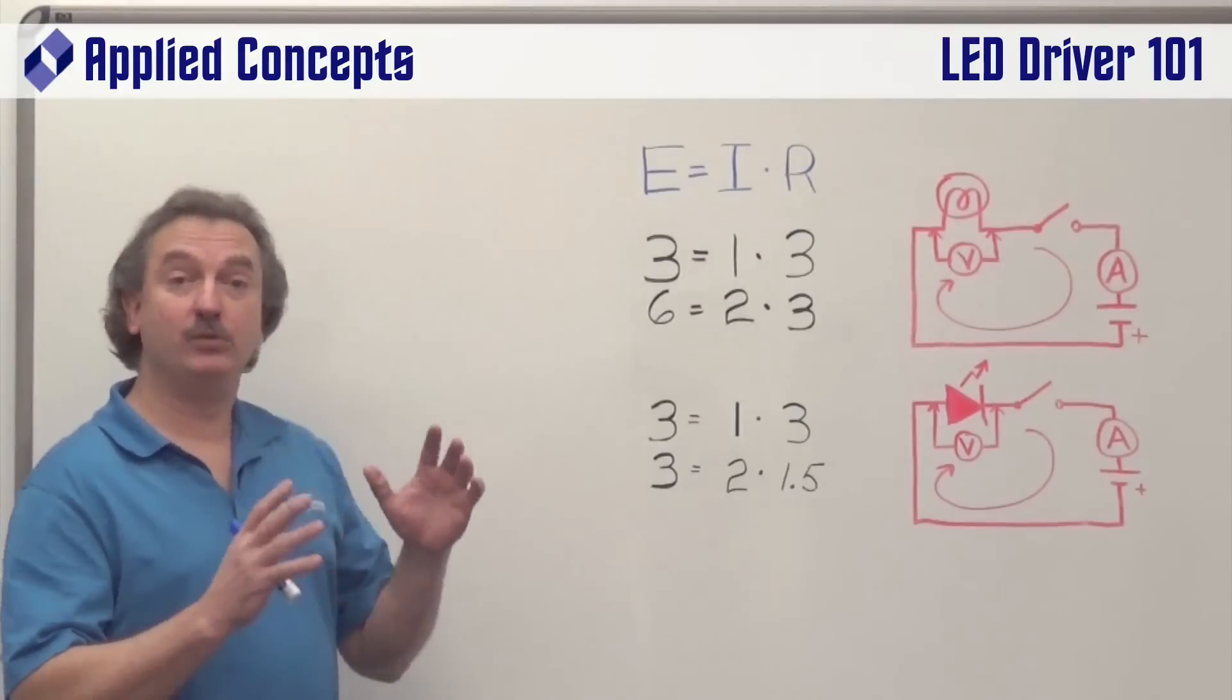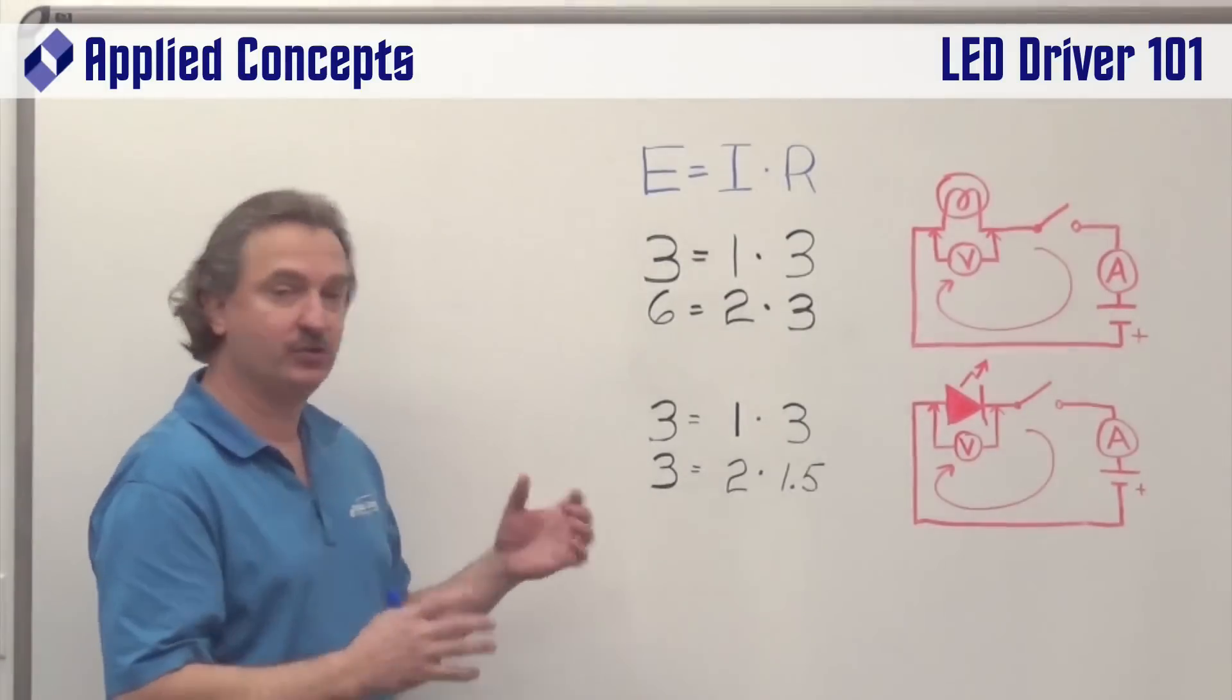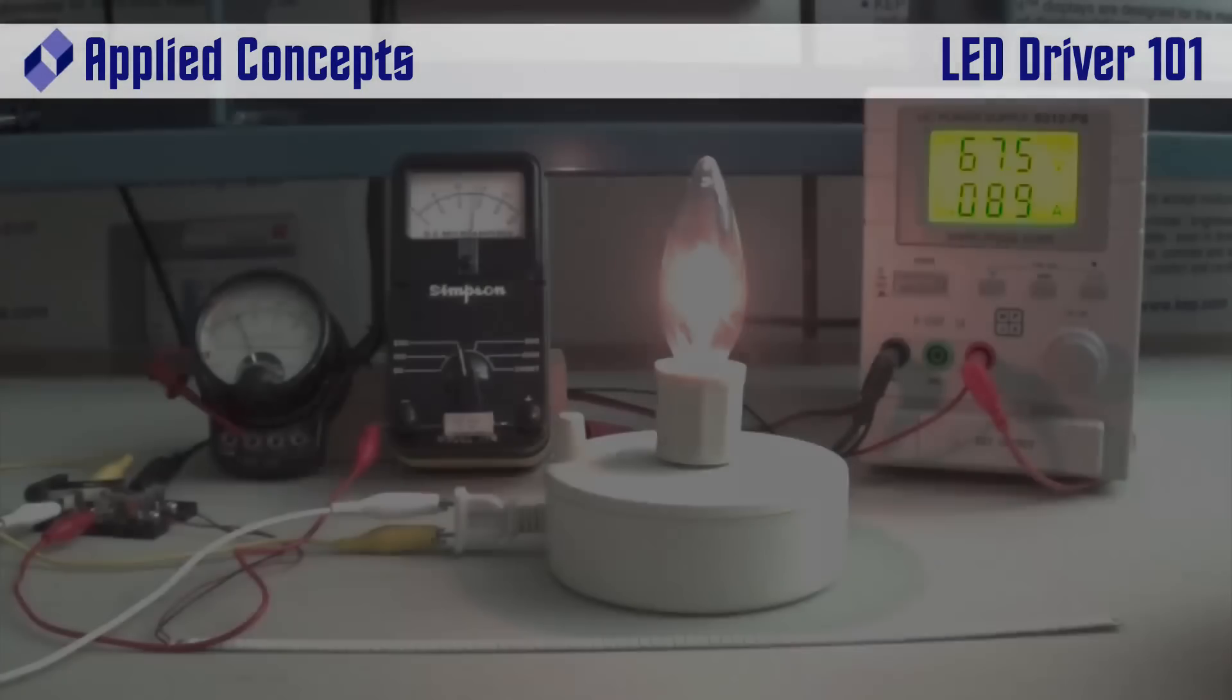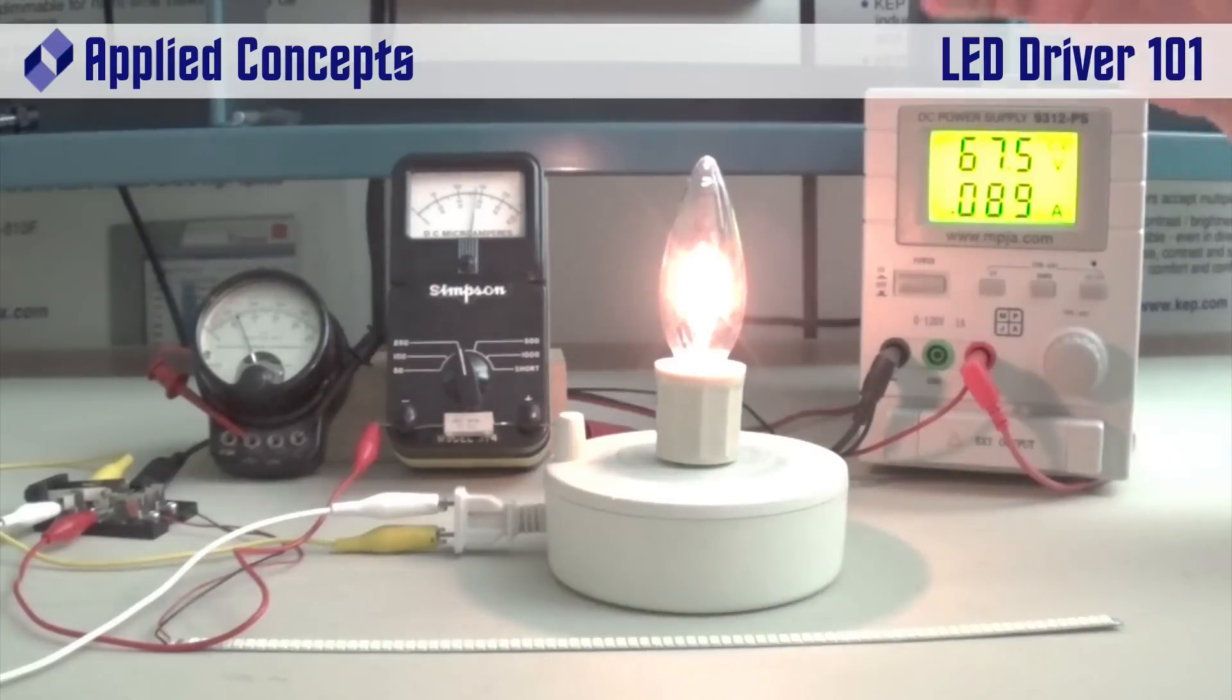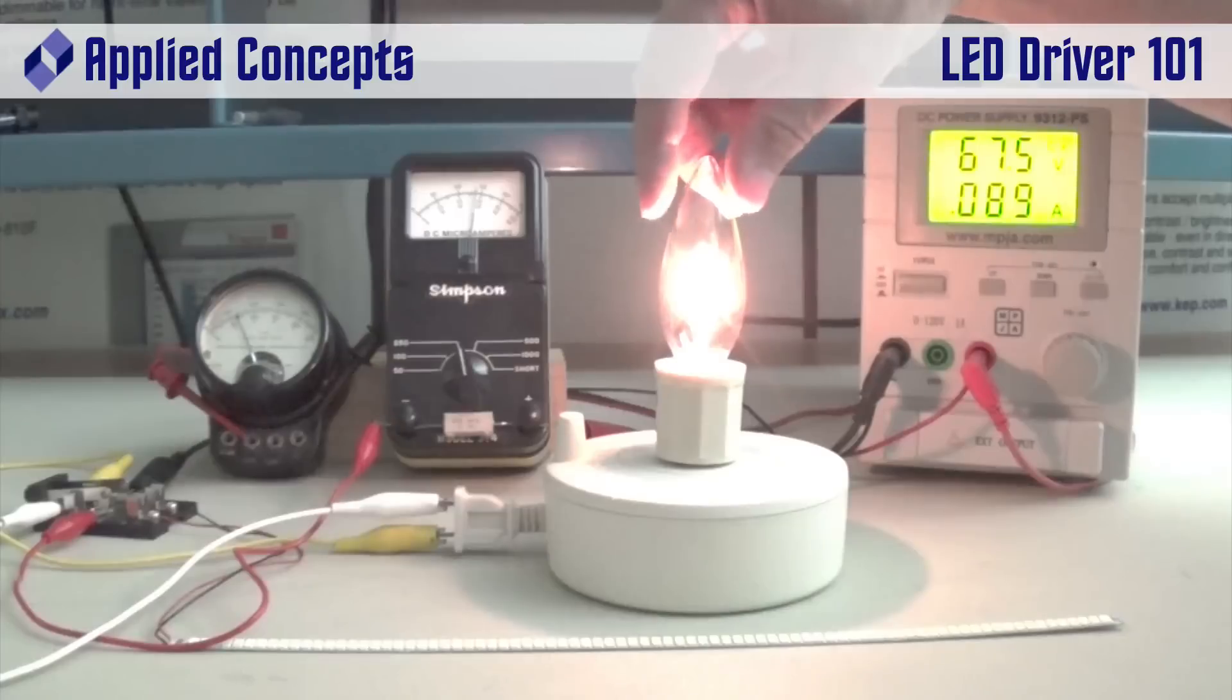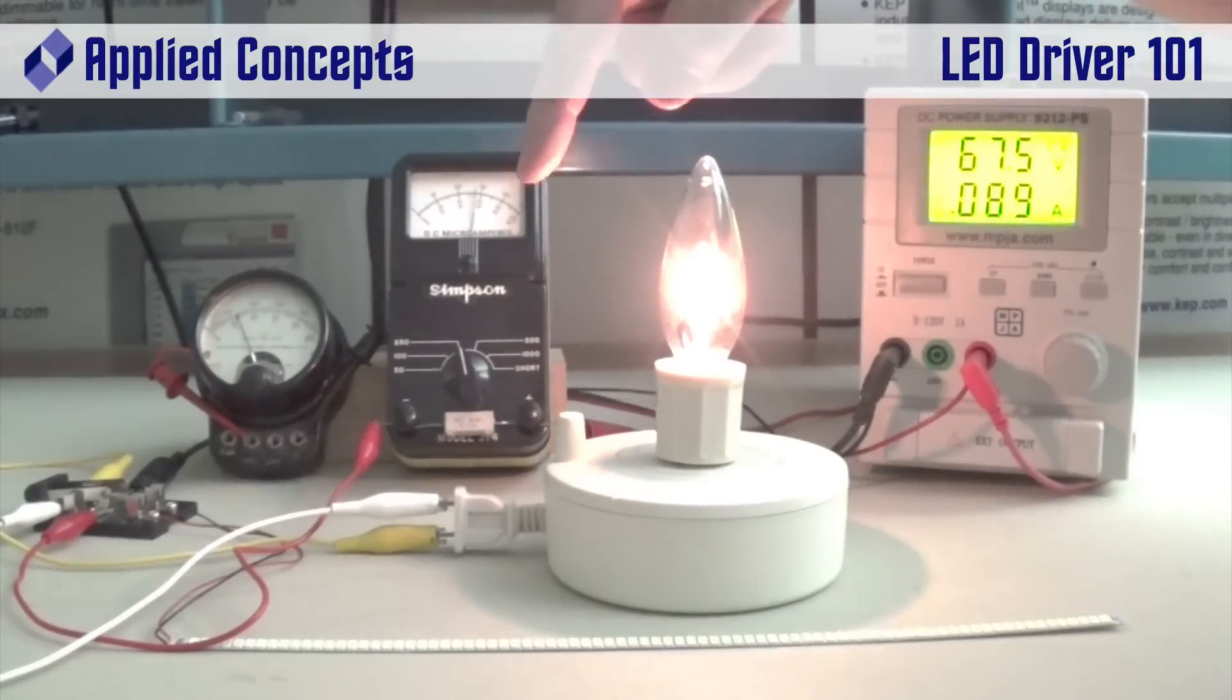We'd like to move now to the lab, and we'll show you a practical demonstration of this so you get a feel for exactly what's happening here. Okay, what we've done here is we've set up the circuit that we've just discussed in the lab. We have a voltmeter to monitor the voltage across an incandescent bulb, and an ammeter to monitor the current through it.